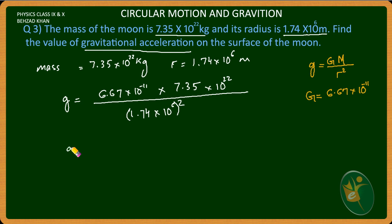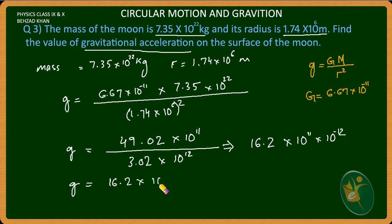This gives us 49.02 × 10¹¹ divided by 3.02 × 10¹², which simplifies to 16.2 × 10¹¹ divided by 10¹². This equals 10⁻¹, so we have 1.62 meters per second squared. It is very simple.